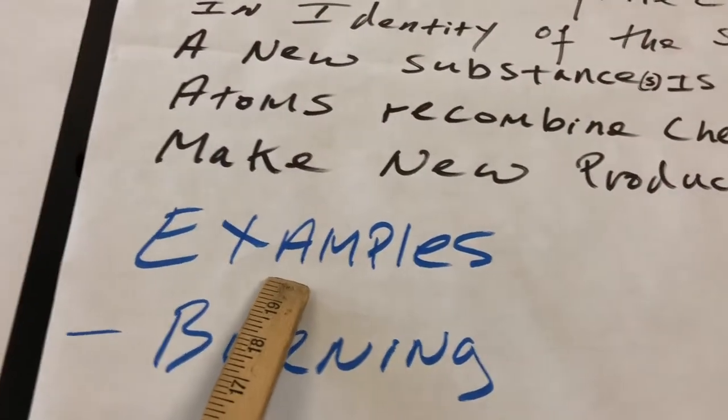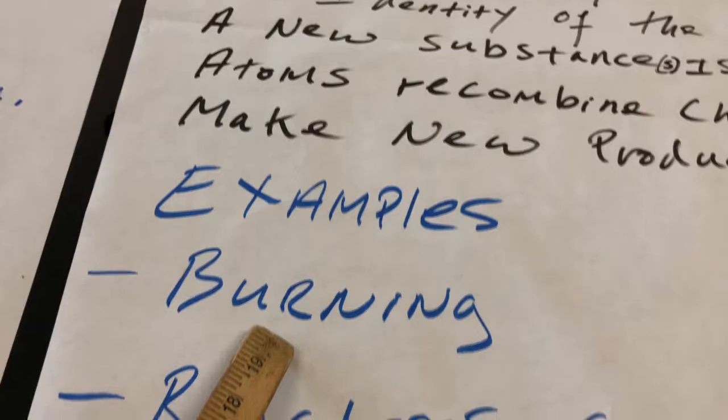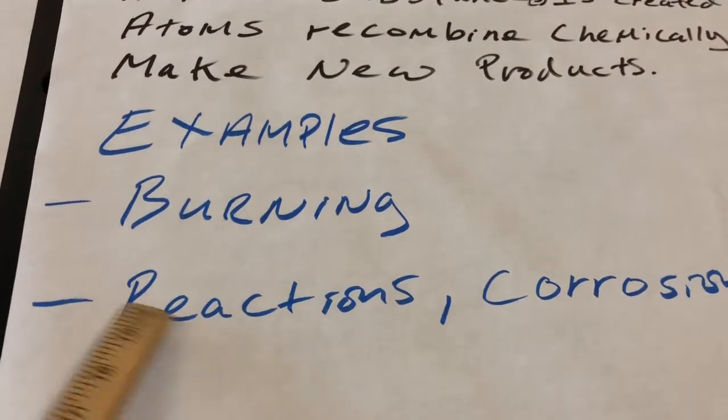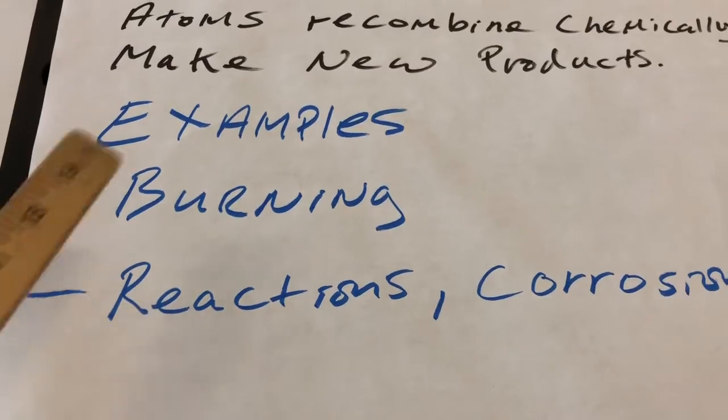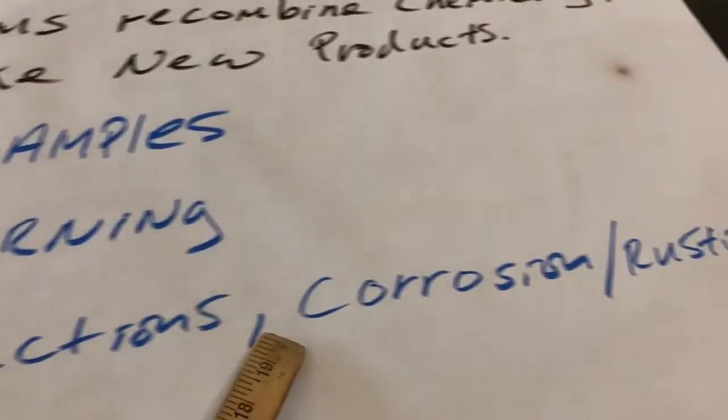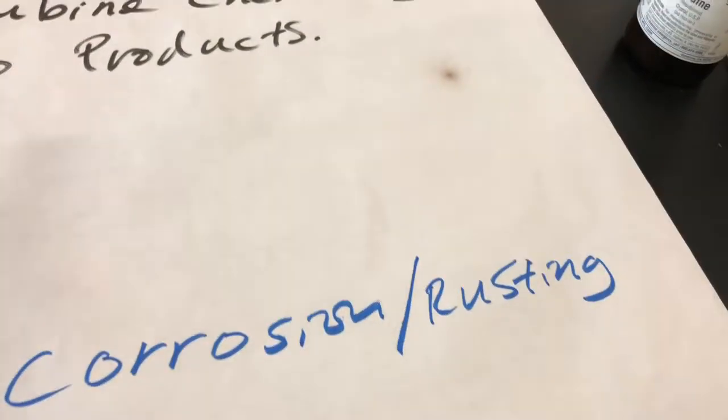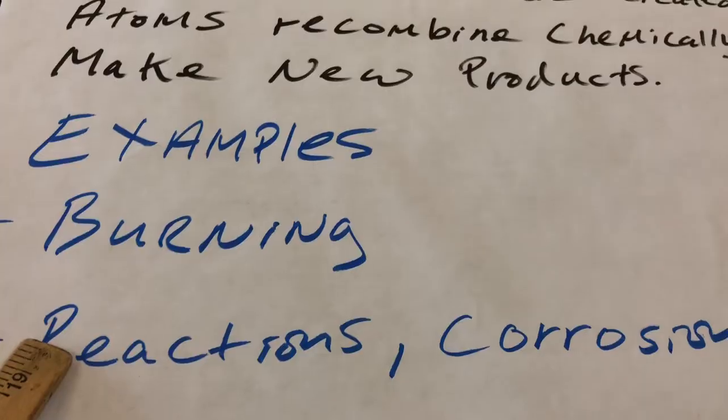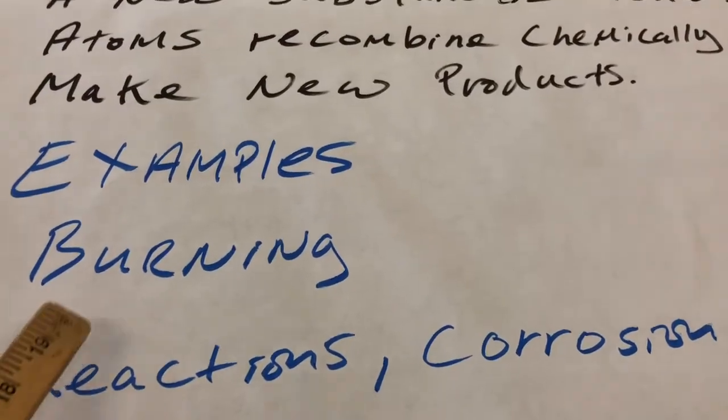Examples of that would be burning and any of the chemical reactions that we're going to encounter in the future. There's a bunch of chemical reactions that we're going to learn, maybe like around five or six. Examples would be corrosion or rusting, but there's some other chemical reactions that we'll learn later on. I'm going to do some experiments in a second, so we'll be back.